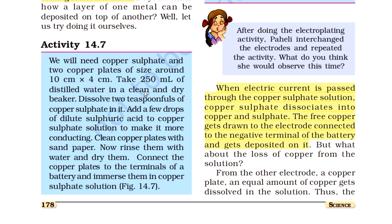एक साफ और सूखे बर्तन में distilled water लो और उसमें कम से कम दो चम्मच copper sulphate मिला दो — mix करके dissolve कर लो। उसके बाद जो solution बना है उसमें dilute sulfuric acid मिलाना है। Dilute का मतलब हल्का और concentrated का मतलब गाढ़ा — हम dilute sulfuric acid की कुछ बूंदें मिलाएंगे।